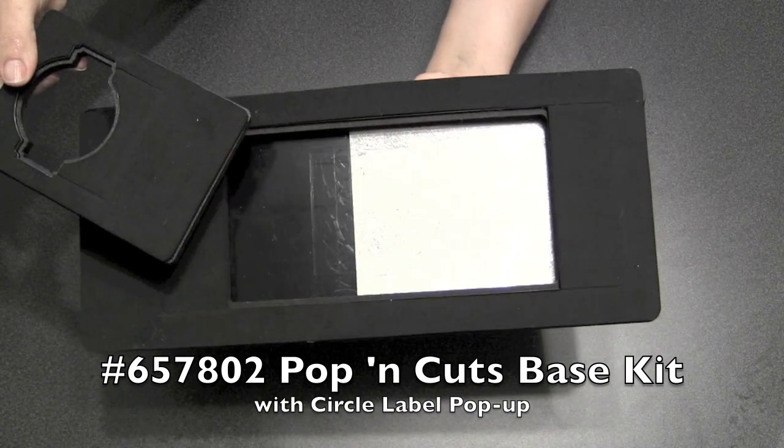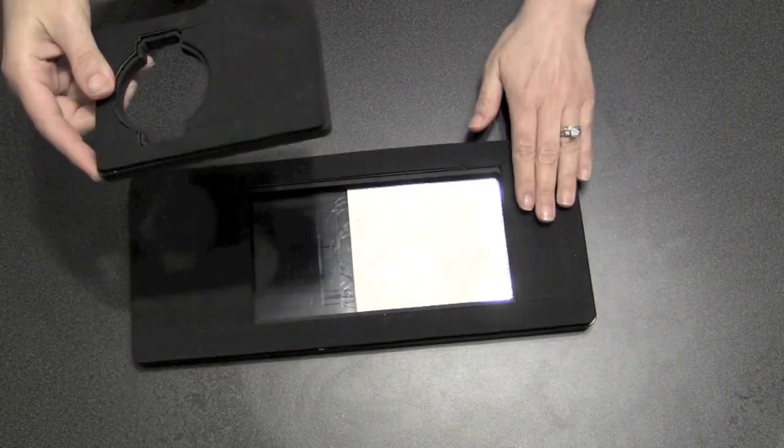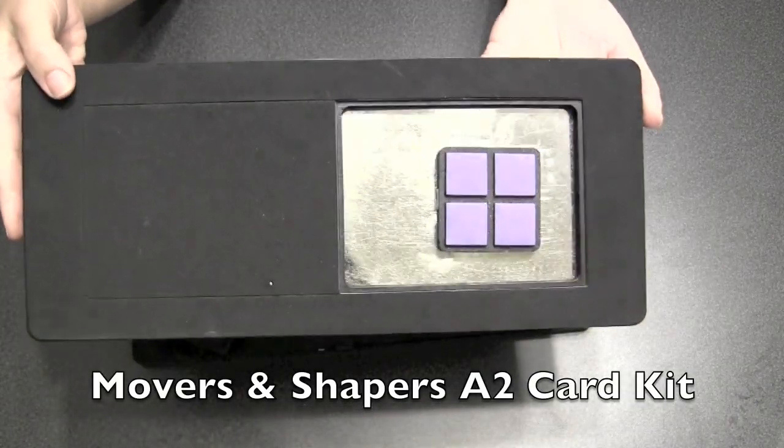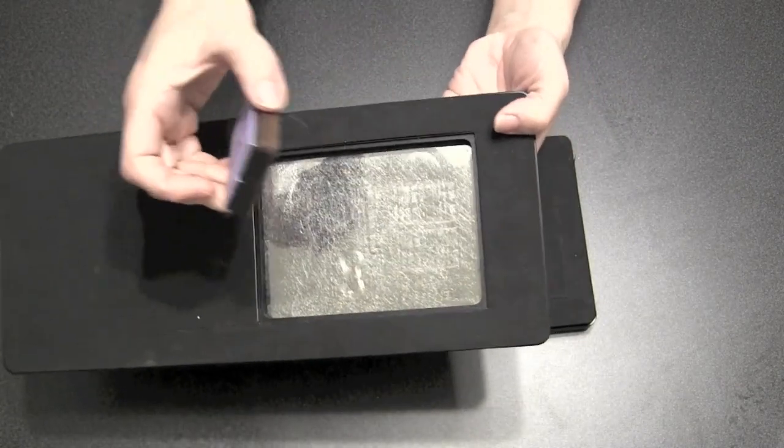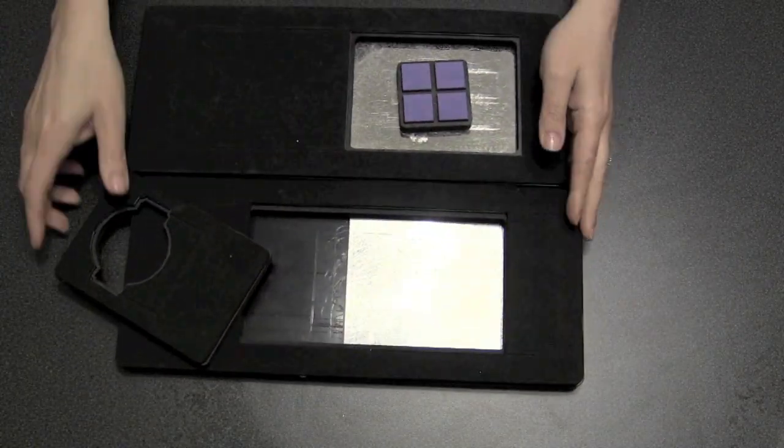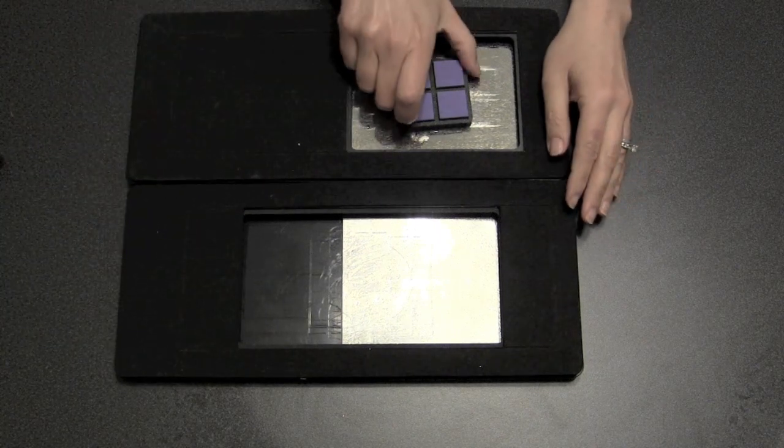Now you might be thinking, as I take this insert out and look at just the base itself, that this kind of resembles something I already have. I purchased a Movers and Shapers A2 Card Kit, and it looks like this, and it has some of that magnetic plate. In fact, it came with a little shape. Is that the same thing? Not exactly.